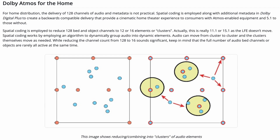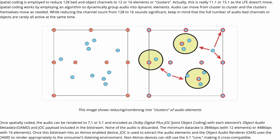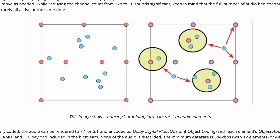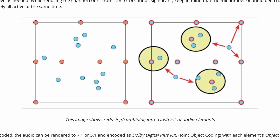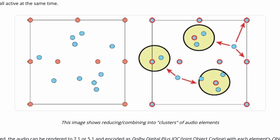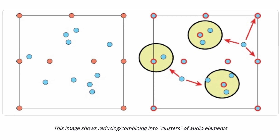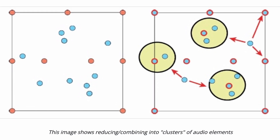Spatial coding reduces to 12 or 16 elements or clusters — really 11.1 or 15.1 — as the LFE doesn't move. So it's really 11 or 15 because the LFE takes up one slot. Spatial coding works by employing an algorithm to dynamically group audio into dynamic elements. Audio can move from cluster to cluster, and the clusters themselves move as needed. While reducing the channel count from 128 to 16 sounds significant, keep in mind that the full number of audio bed channels or objects are rarely all active at the same time.